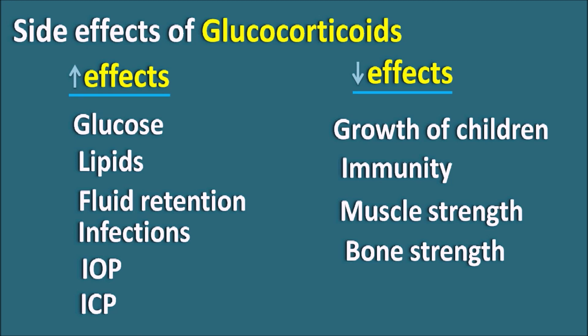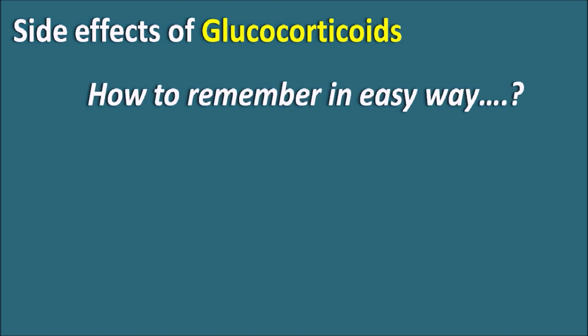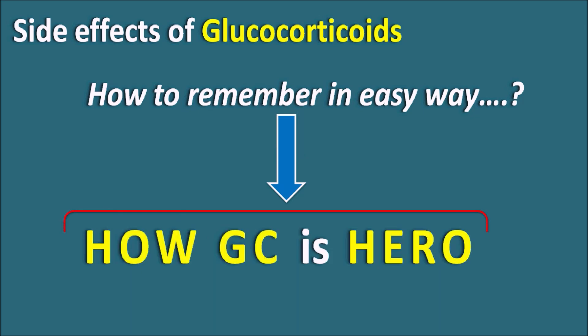Glucocorticoids produce a large number of side effects which are not easy to remember. So how can we remember them easily? Let us take a small mnemonic code: 'HOW GC IS HERO'. Every letter indicates a side effect of glucocorticoids. Since glucocorticoids are generally termed GC, we can remember this code: HOW GC IS HERO.